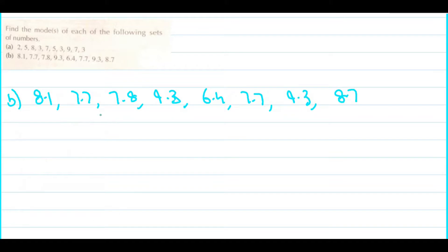Now, these are the numbers in question 1 part 2. As you can see, 6.4 has occurred once, whereas 7.7 has occurred twice, 7.8 has occurred once, 8.1 has occurred once, 8.7 has occurred once and 9.3 has occurred twice.